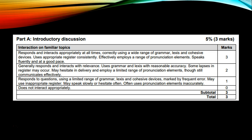This is the marking key for Part A — introductory discussion. It says here: interaction on familiar topics. For you to get full marks, which is three, you're supposed to use a wide range of grammar, lexis and cohesive devices. You're supposed to use appropriate language and vocabulary, speak fluently and at a good pace, and your pronunciation is expected to be very good. You're also supposed to interact appropriately.